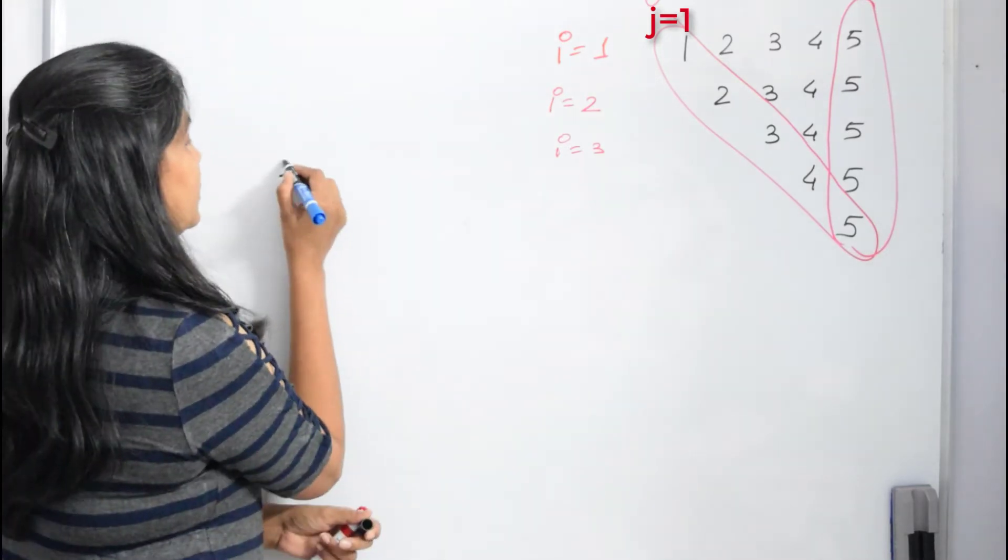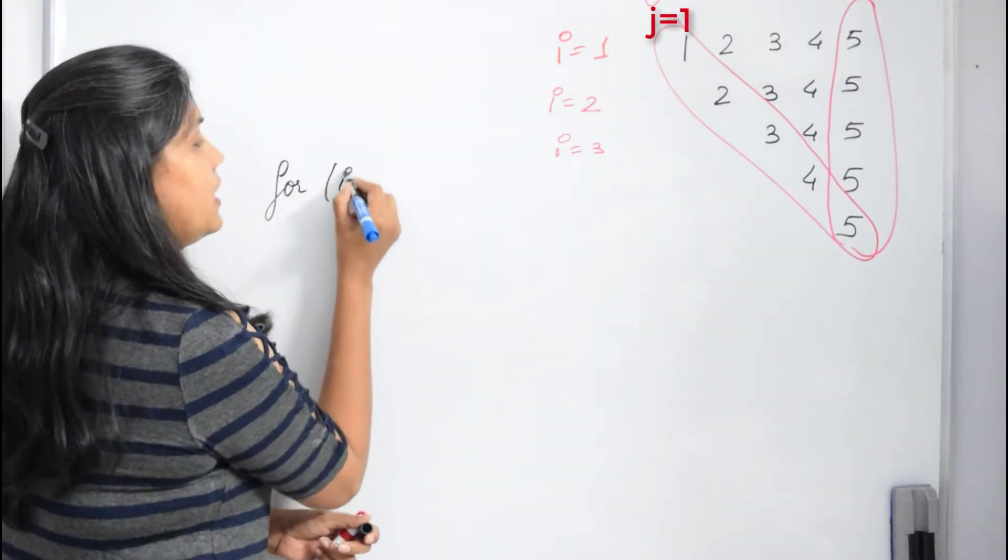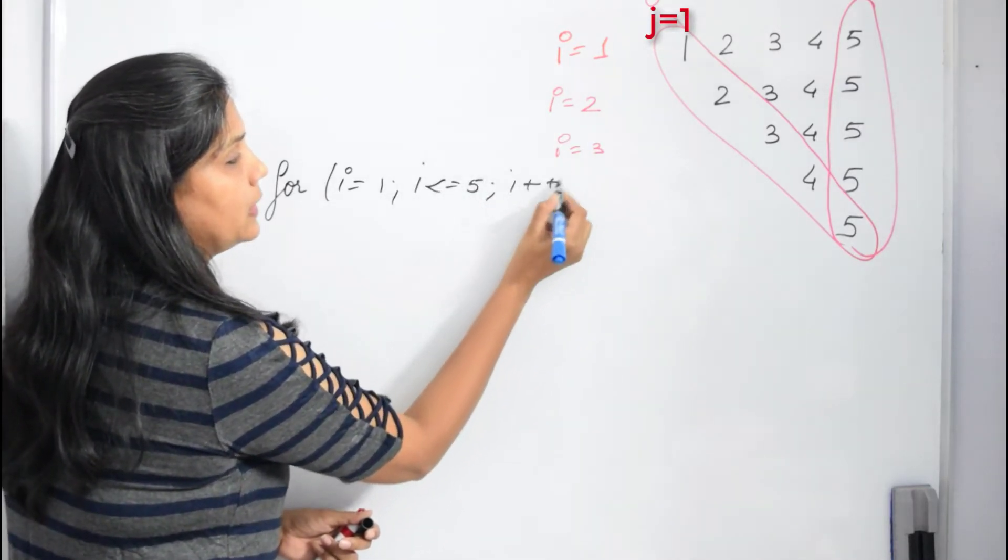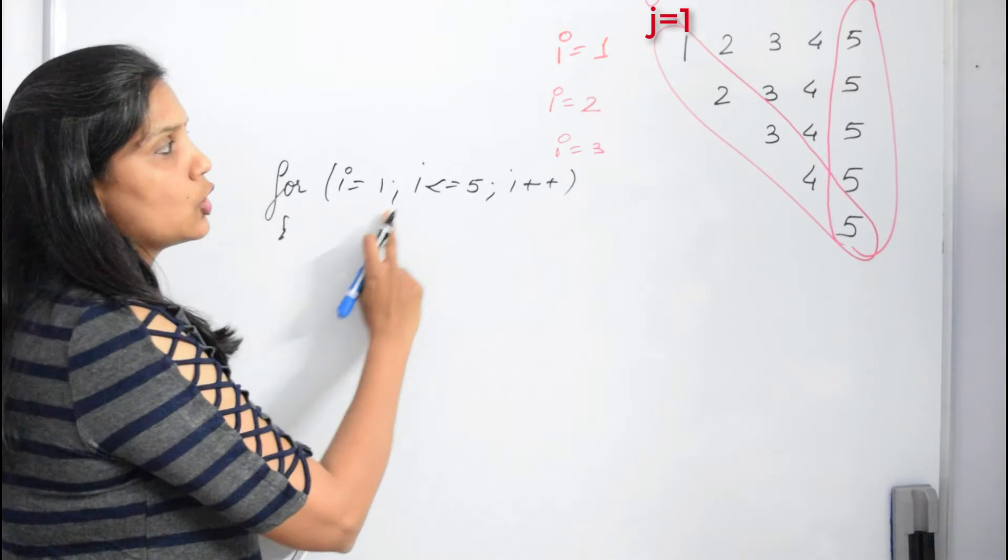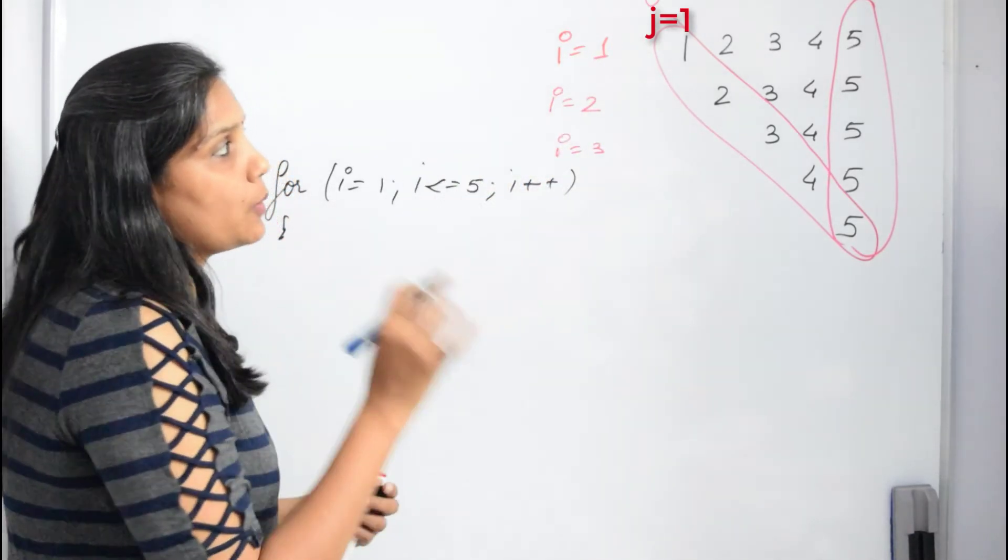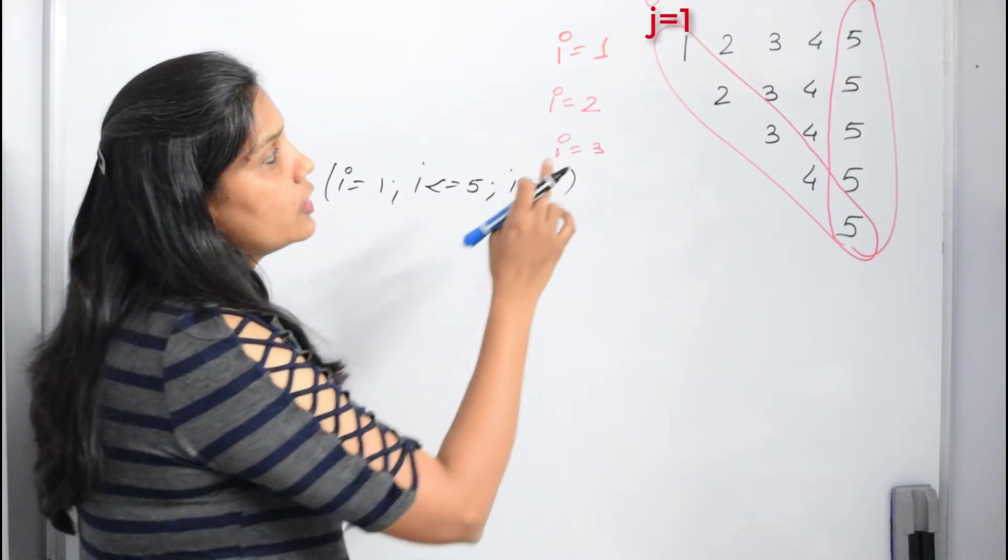So it's very easy, we can just write the outer loop. The outer loop is: for i equals 1, i less than equal to 5, and i plus plus. So this loop runs 5 times, no issues.